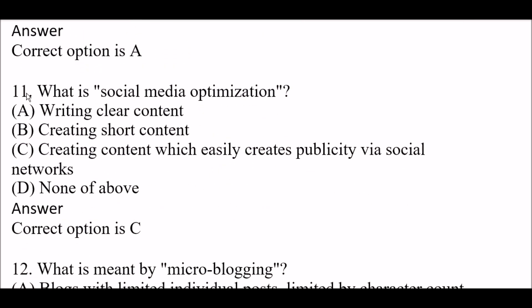Next question: what is social media optimization? Option A: writing clear content. Option B: creating short content. Option C: creating content which easily creates publicity by social networks. Option D: none of the above. Right answer is Option C: creating content which easily creates publicity by social networks.